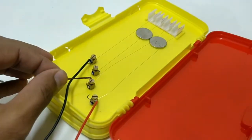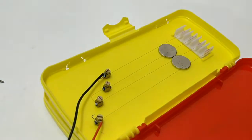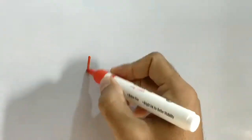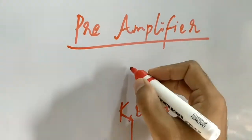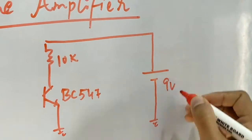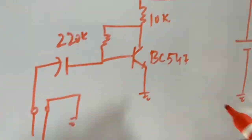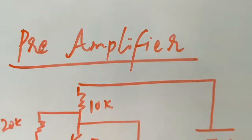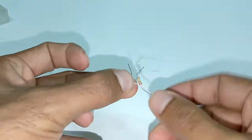The idea here is I would like to pass a string across the magnetic field. When I strum the strings, they are going to vibrate and produce voltage. But when I check it, the voltage produced is too weak and you can't do anything with that, so I have to use a pre-amplifier here to amplify the signal.